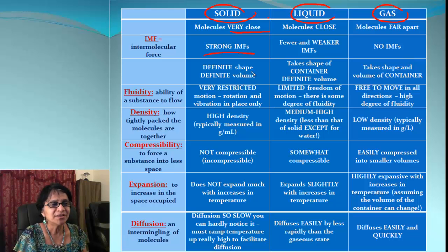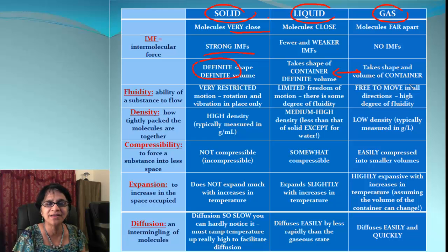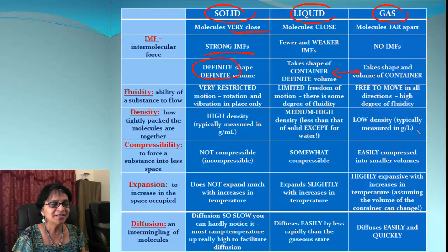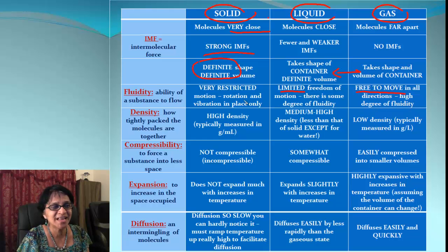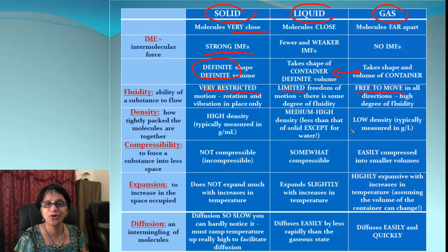How about shape? Solids will always have a definite shape and volume, whereas both liquids and gases will take the shape of the container. Then about fluidity — we know liquids are fluid, they can move. Gases are extremely freely moving all over the place, whereas in solids fluidity is very restricted.